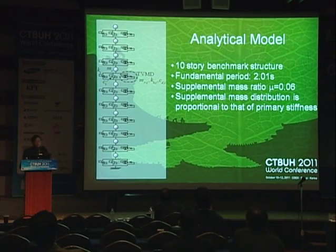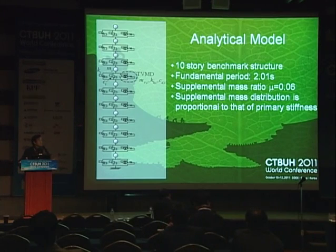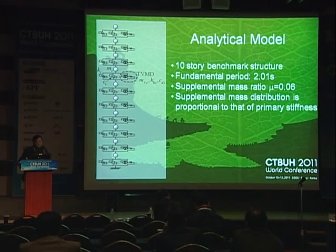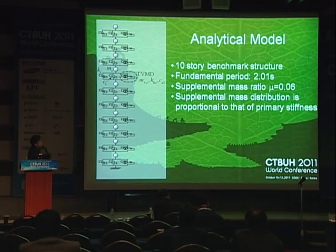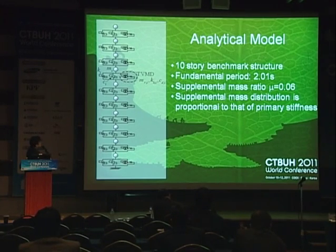I'd like to show the modal response characteristics of a multi-story building incorporated with the tuned viscous mass damper using an analytical model. This 10-story benchmark structure is provided by the Japan Society for Base Isolation. The building has a fundamental period of 2.01 seconds, and the supplemental mass ratio attached to this structure is 0.06. Each damper has secondary masses distributed proportional to the stiffnesses of the primary structure.